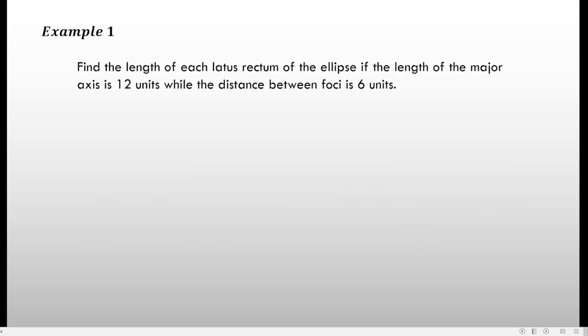Example number 1: Find the length of each latus rectum of the ellipse if the length of the major axis is 12 units while the distance between foci is 6 units. First, our goal is to get the length of each latus rectum. From the problem, we are given 2a equals 12, because the major axis is equivalent to 2a.